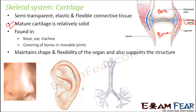Have you ever noticed? You can just try it in your ear — you would see that certain parts of the ear are neither very soft nor very hard. It is not as hard as a bone that you cannot move or twist it. It is a relatively solid structure, neither as hard as bone nor very soft. This is where cartilage is present.